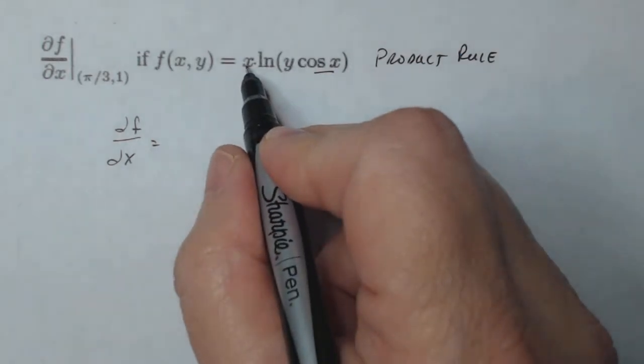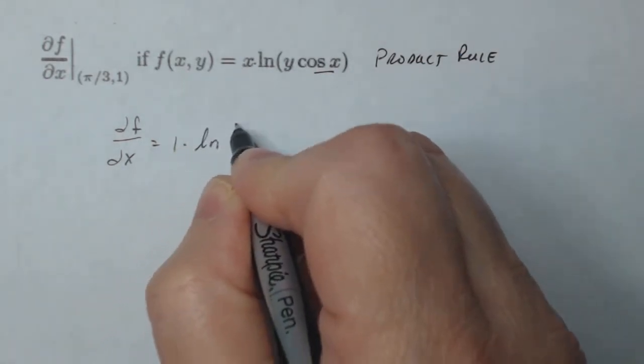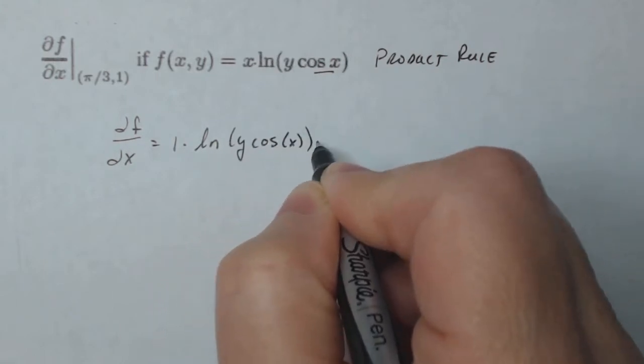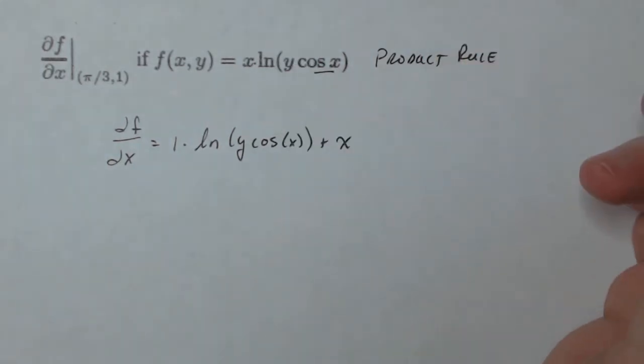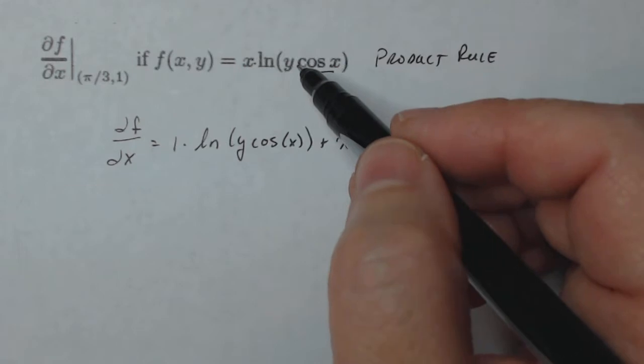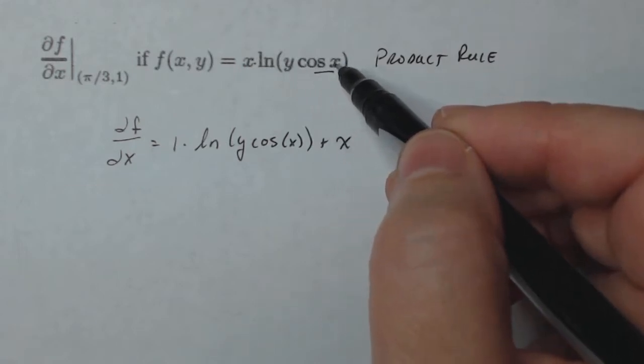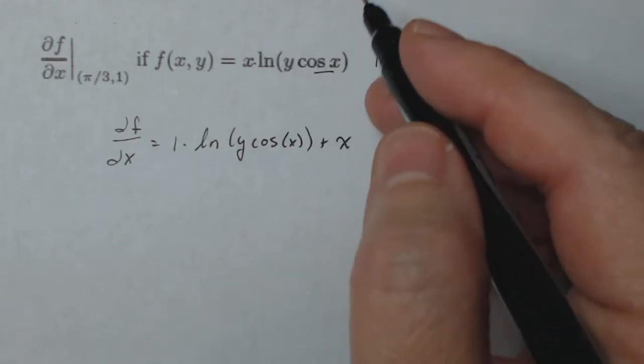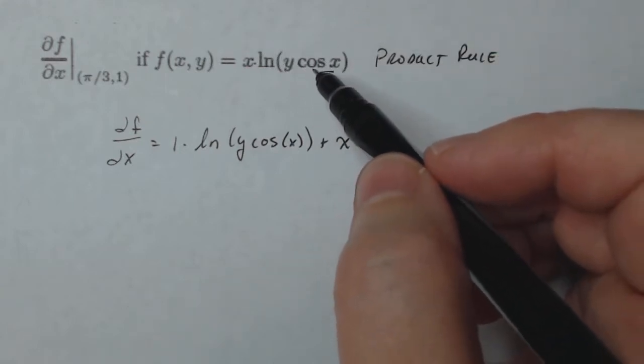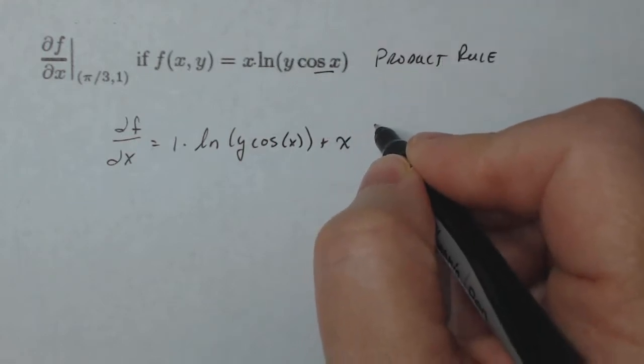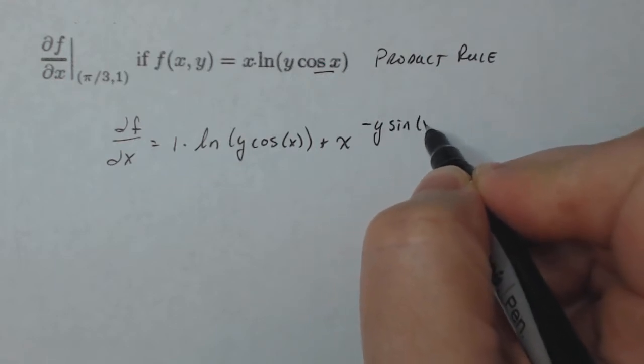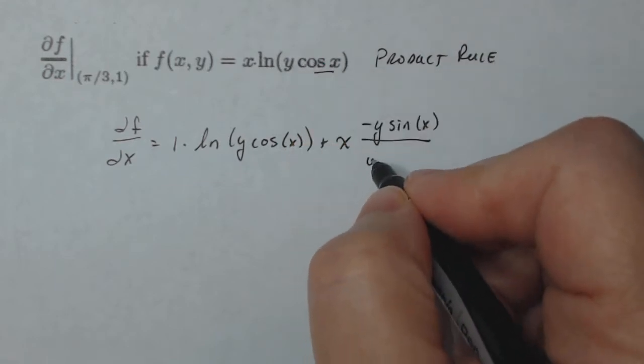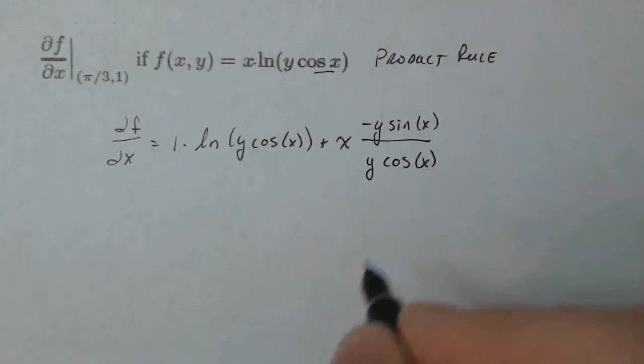So I'm gonna take the derivative of the first function times the second function plus the first function times the derivative of the second function. Now the derivative of any natural log of a function is the derivative of the inside portion of the natural log divided by the original inside. So I take the derivative of y cosine x with respect to x. Y is a constant so it stays but the derivative of cosine is minus sine. So that's my numerator and then the denominator is the original y cosine x.